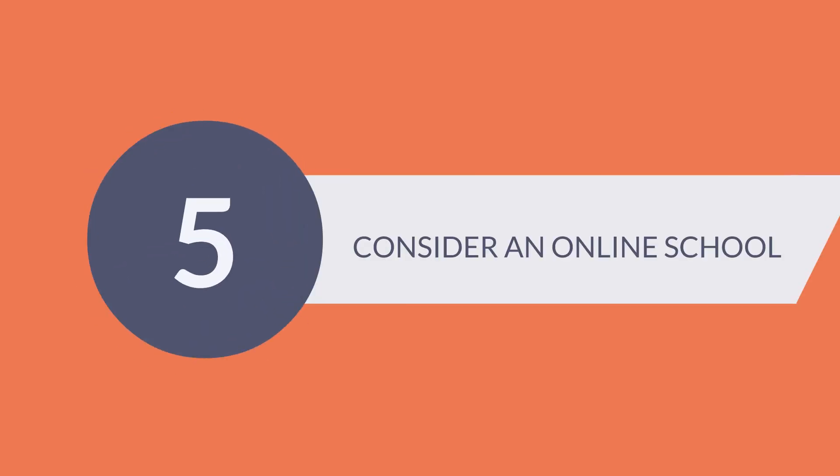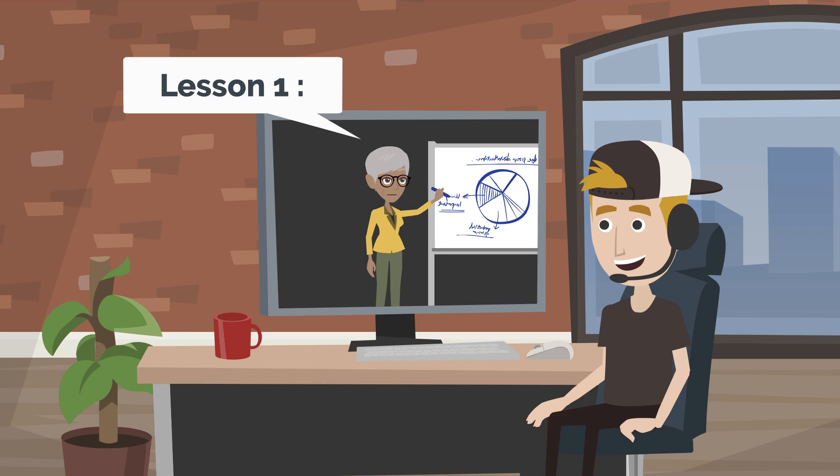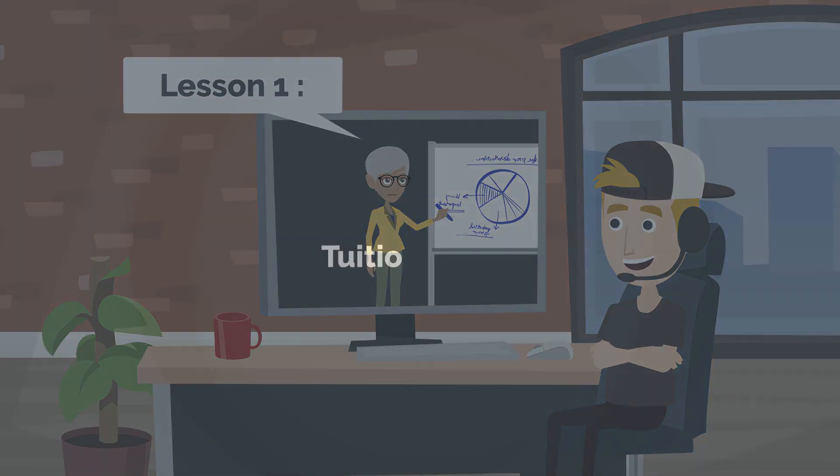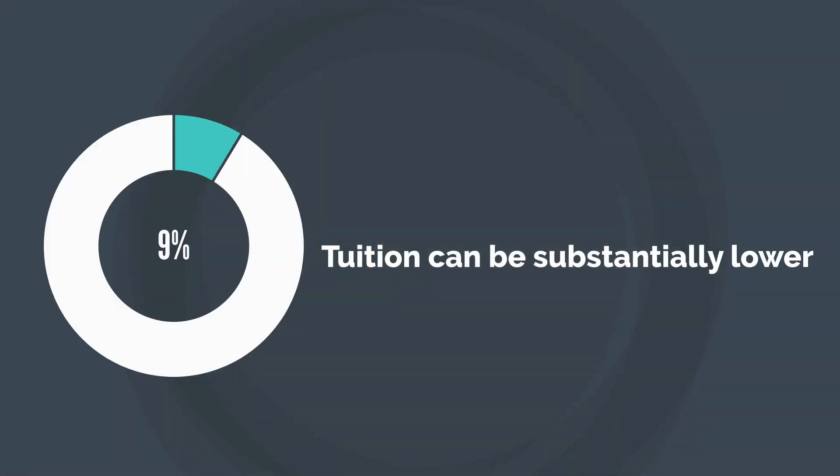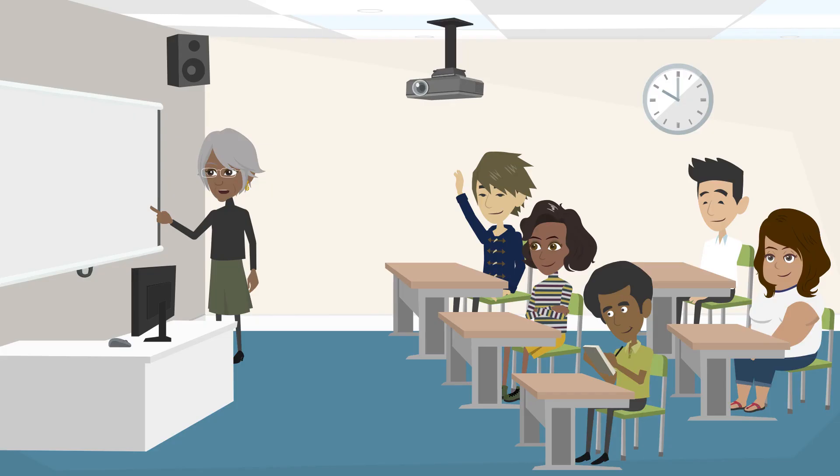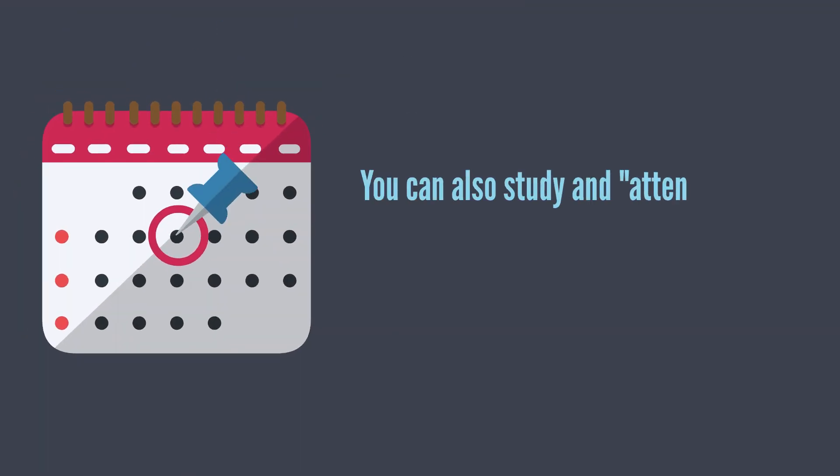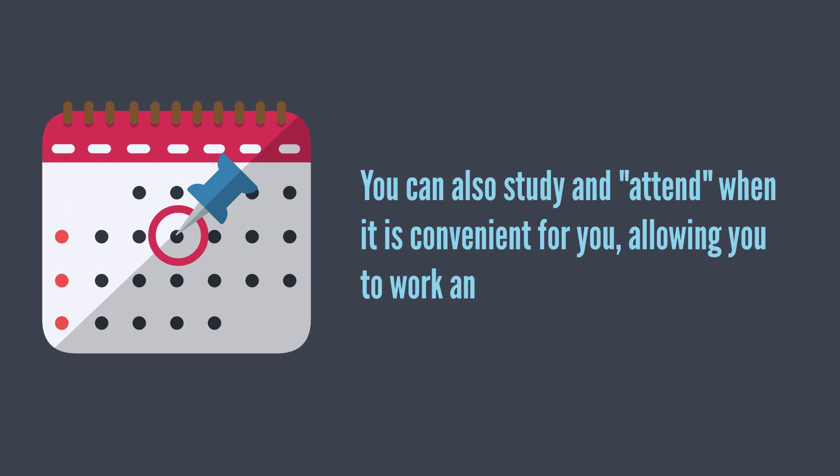5. Consider an Online School. Don't dismiss the option of attending an online school. Tuition can be substantially lower, often as much as 50% lower, and classes are usually identical to those you'd take in a traditional classroom. You can also study and attend when it is convenient for you, allowing you to work and study simultaneously.